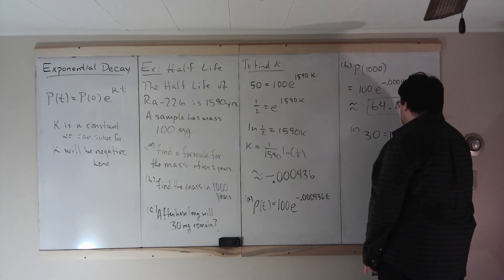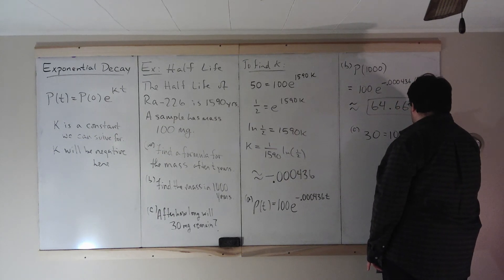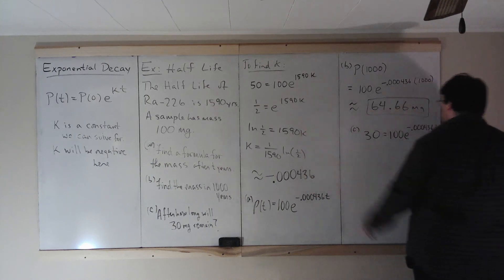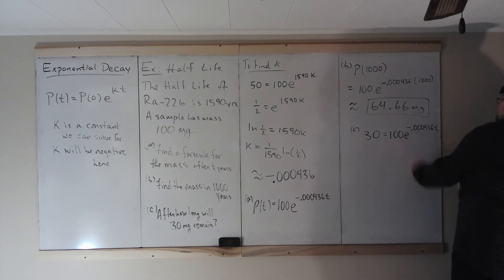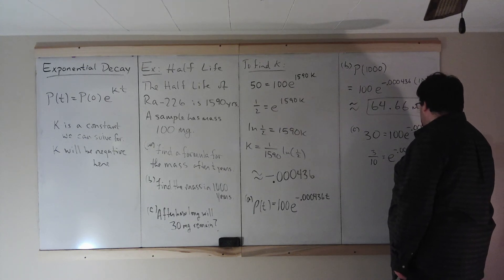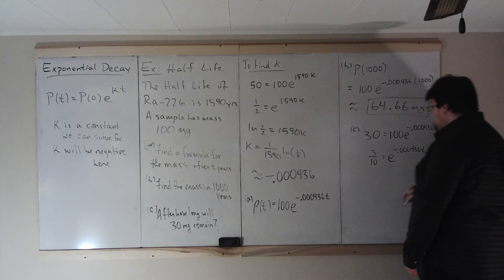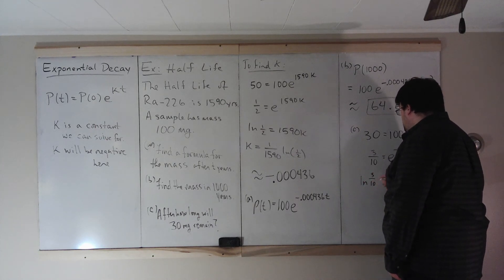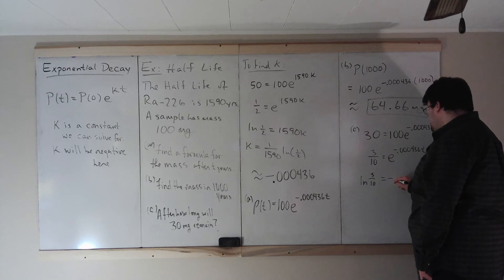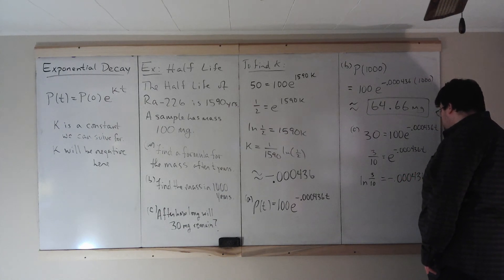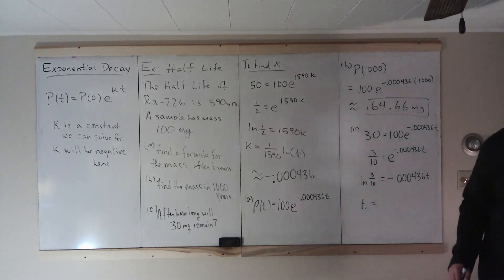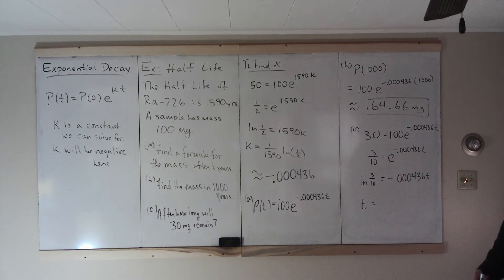So 30 equals 100 e to the negative 0.000436t. And we want to solve this for t. Well, solving this for t is very similar. Divide by 100. So you get 3 tenths is e to the negative 0.000436 times t. Log of both sides cancels out the e. In math, if you say log without specifying the base, it almost always means the natural log. Natural log of both sides gives us this. Divide by this number and in the decimal we get that t is approximately 2,762 years.